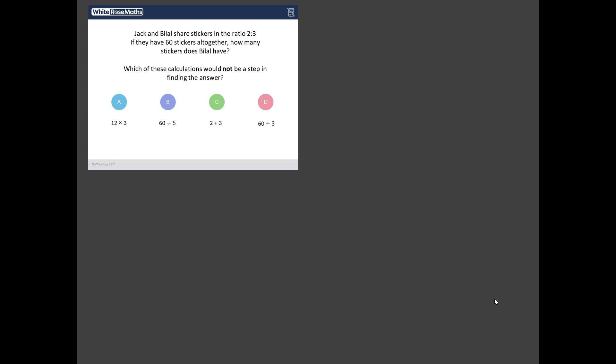So what have we got? We've got Jack and Bilal share stickers in the ratio two to three. If they have 60 stickers all together, how many stickers does Bilal have? Which of these calculations would not be a step in finding the answer? Well, do you know what I'm going to do? I'm going to work out the answer, and I'll see what my calculations involve, and then we can compare those to each of these four choices.